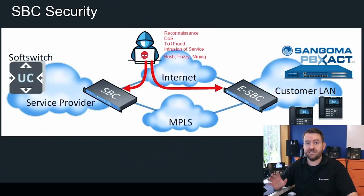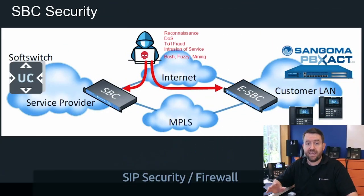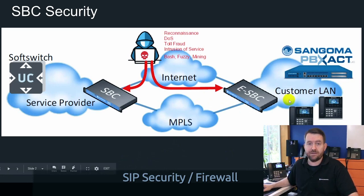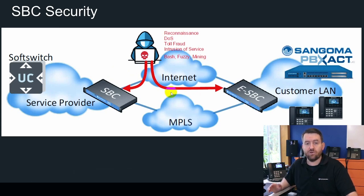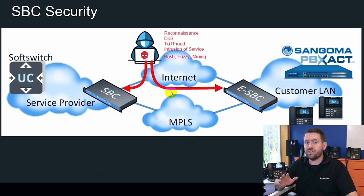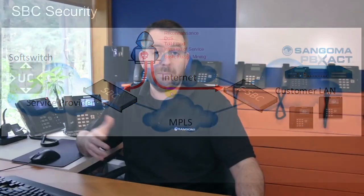The first use case for SBCs is security. An SBC will typically sit between a trusted zone such as your LAN and an untrusted zone such as the WAN or internet. It provides a buffer between the outside world and your internal PBX. It's never a good idea to open up SIP from the outside world directly into your PBX without some sort of protection. SBCs act as a SIP firewall on the network, and this is a good example of that.